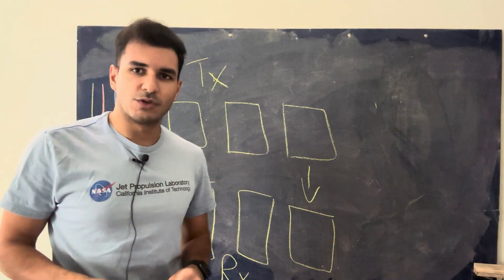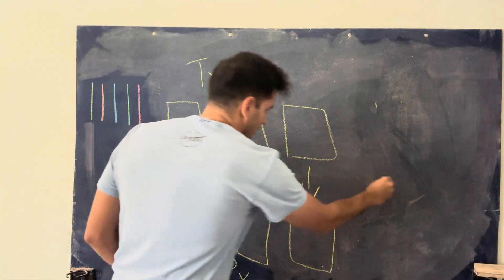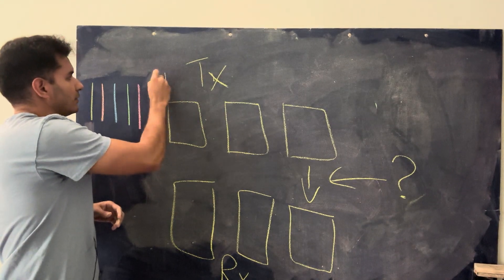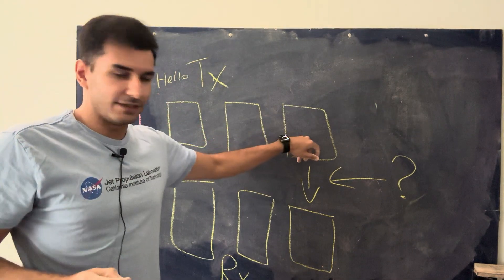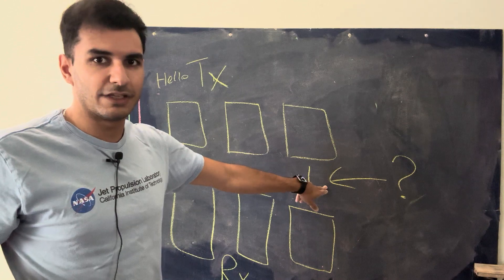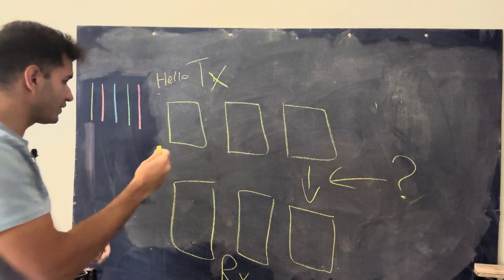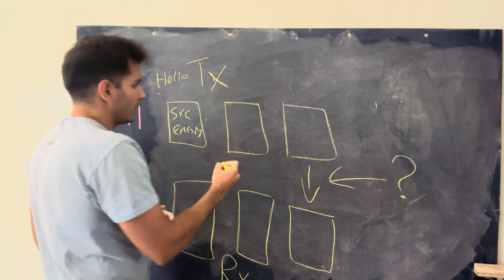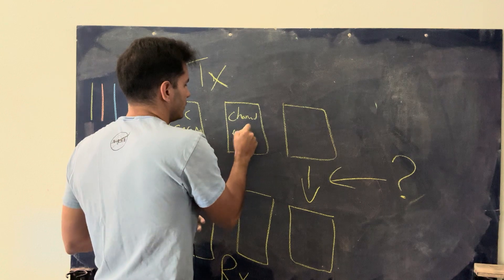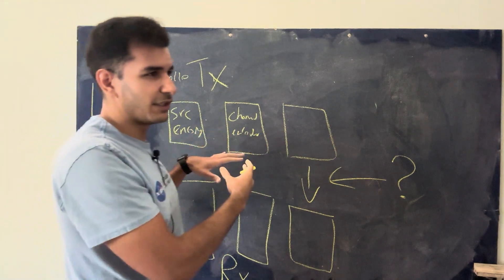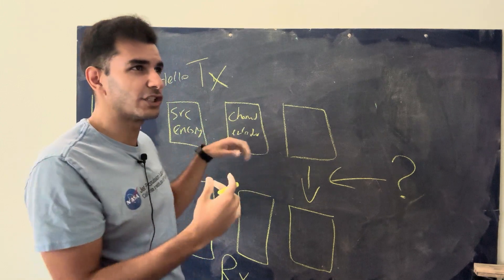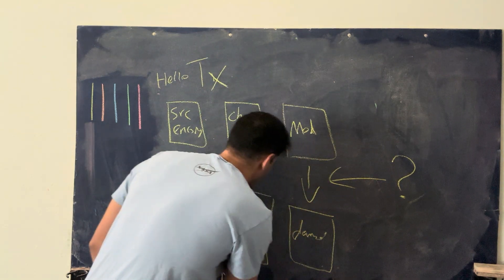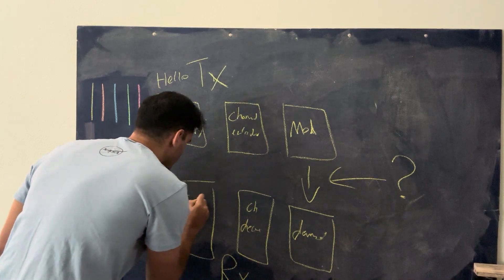Every communication system, or most communication systems, follow this configuration. Starting with a word like 'hello', there are three steps that need to take place before you transmit. First, there's something called a source encoder — encoding the source. Then there's something called a channel encoder. And then there's the modulator — mod. On the receiver side: demod, channel decode, and source decode. This is a very classic configuration of communication systems — if you crack open most communication system textbooks, this is basically what it's going to look like.